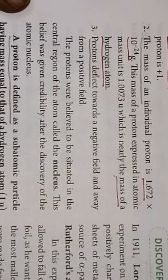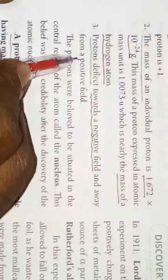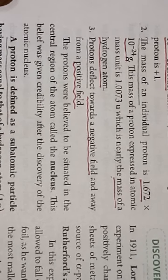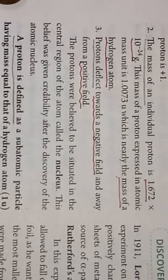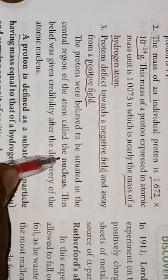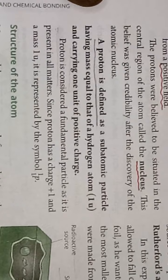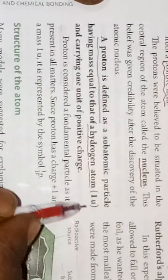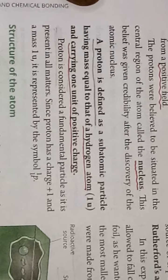Protons deflect towards the negative plate and away from the positive field, because as they are positively charged, they are attracted to the negative field and repelled from the positive field. Protons were believed to be situated in the central region of an atom called the nucleus. A proton is defined as a subatomic particle having mass equal to that of a hydrogen atom, 1 unit, and carrying 1 unit of positive charge. You have to remember the exact charges and masses.